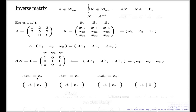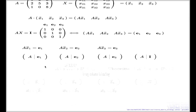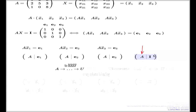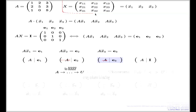If you can reduce the expanded augmented matrix to reduced row echelon form, the left-hand side becomes the identity, and the right-hand side will be the matrix whose columns are the solutions X1, X2, X3 — effectively giving you your inverse matrix X = A⁻¹. This is the strategy for finding the inverse matrix.